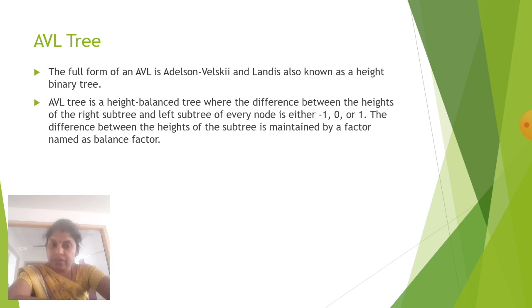The next is AVL tree. The full form of AVL tree is Adelson, Velsky and Landis, also known as height balanced binary tree. AVL tree is a height balanced tree where the difference between the heights of the right subtree and the left subtree of every node is either minus 1, 0 or 1. The difference between the heights of the subtree is maintained by a factor named as balance factor.